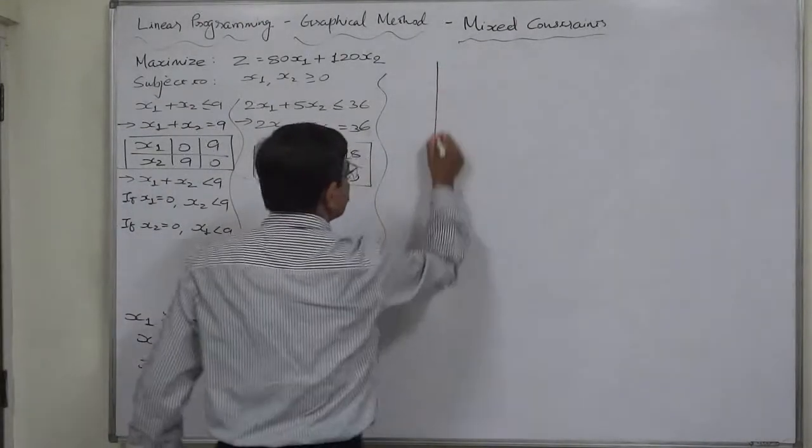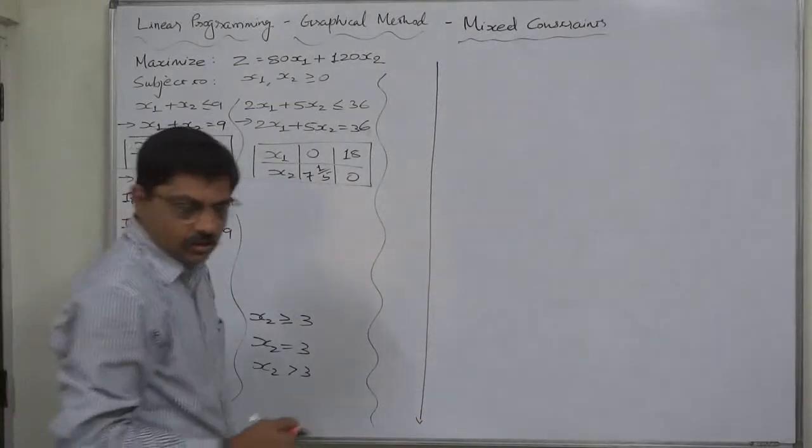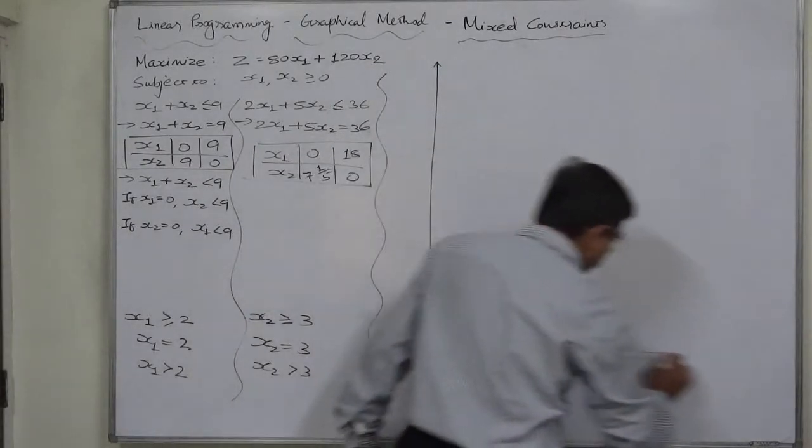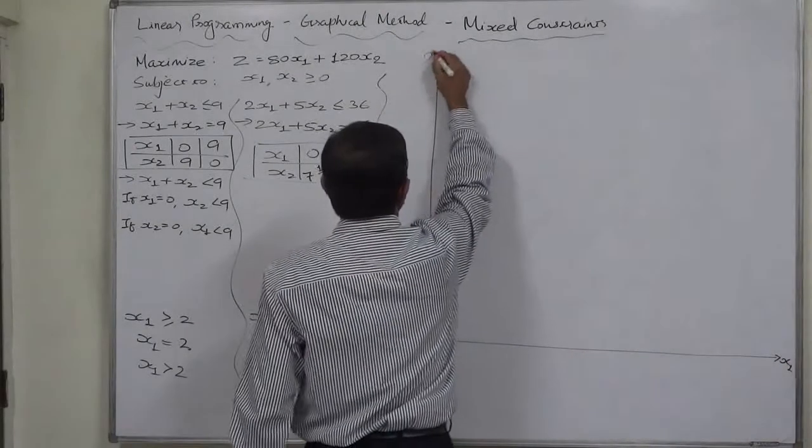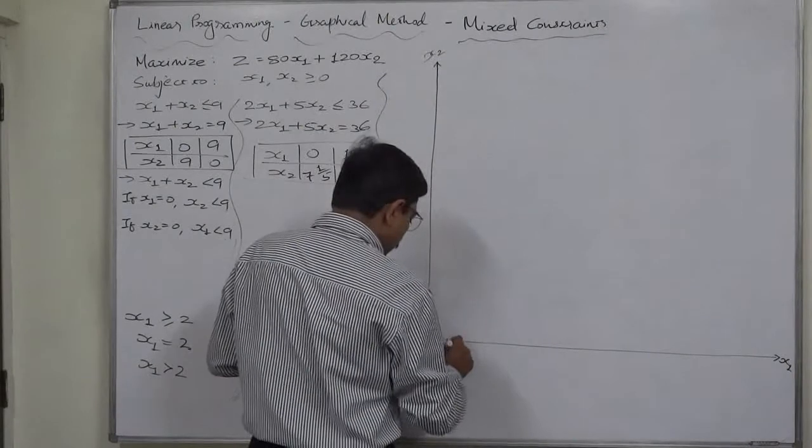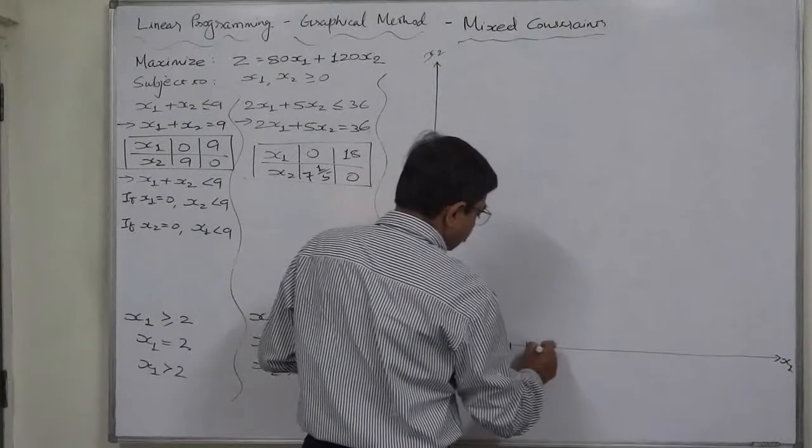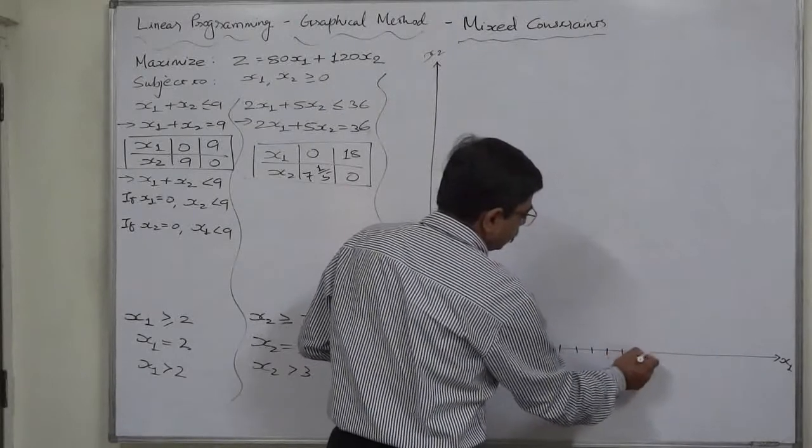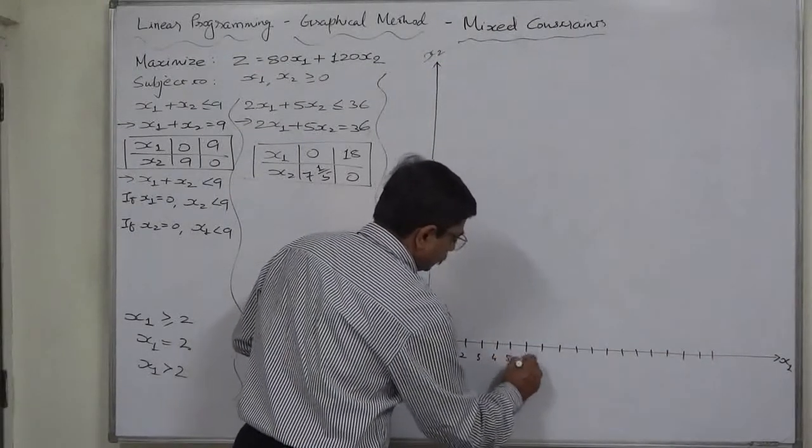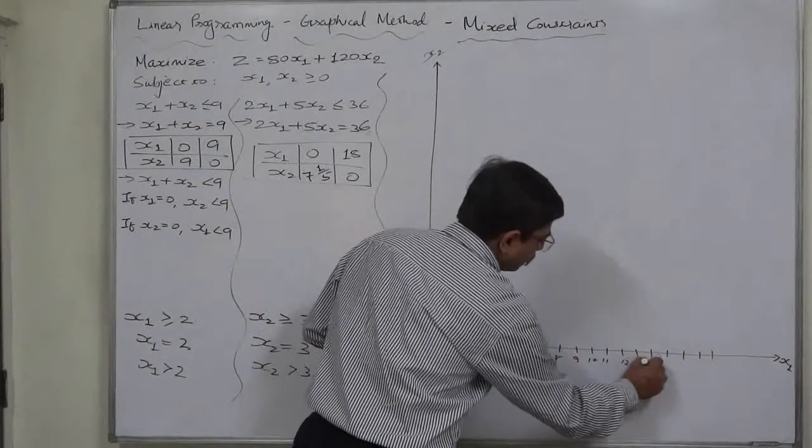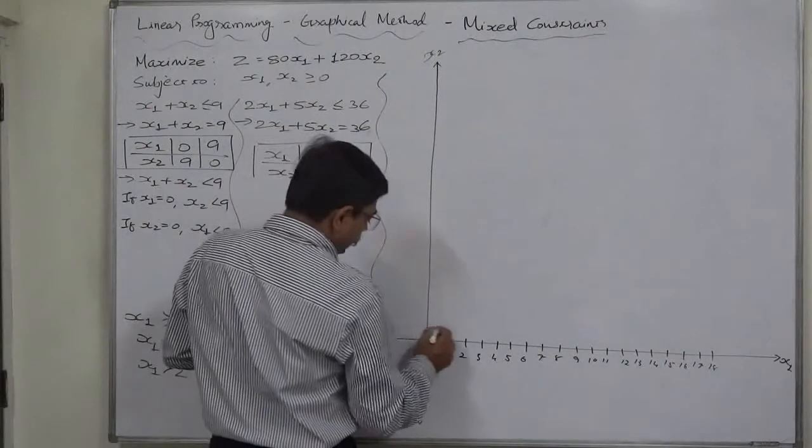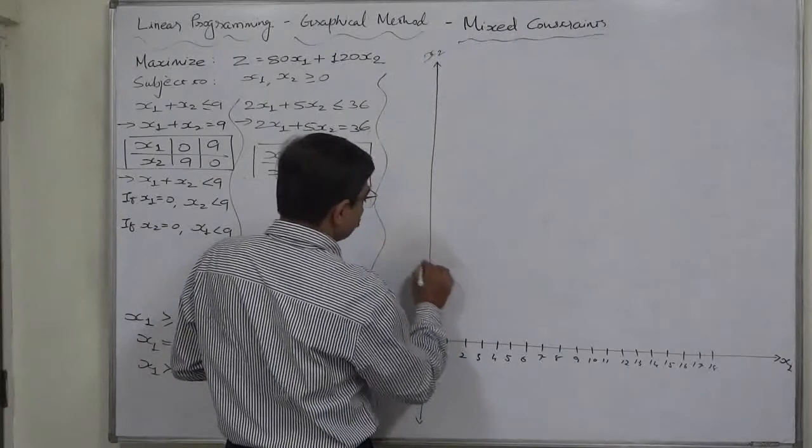Let's try. As usual, I am going to draw the sketch of the graph only. You people please use graph sheet every time you practice these kinds of sums. Yes, 18: 1, 2, 3, 4, 5, 6, 7, 8, 9, 10, 11, 12, 13, 14, 15, 16, 17, and 18. And on x2 axis, highest value needed is 9: 1, 2, 3, 4, 5, 6, 7, 8, 9.